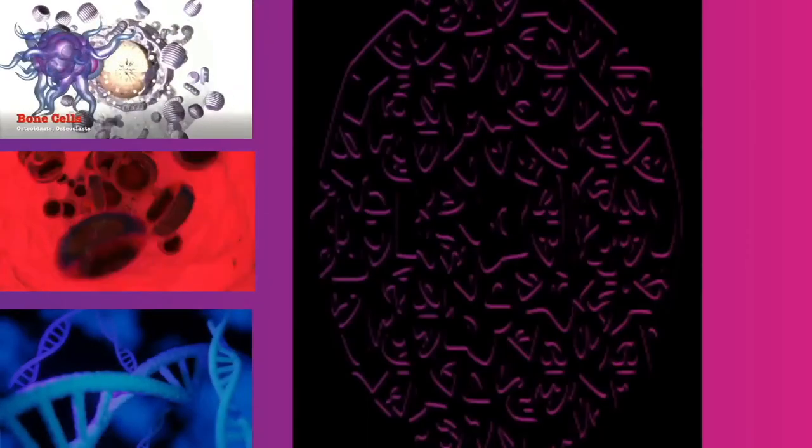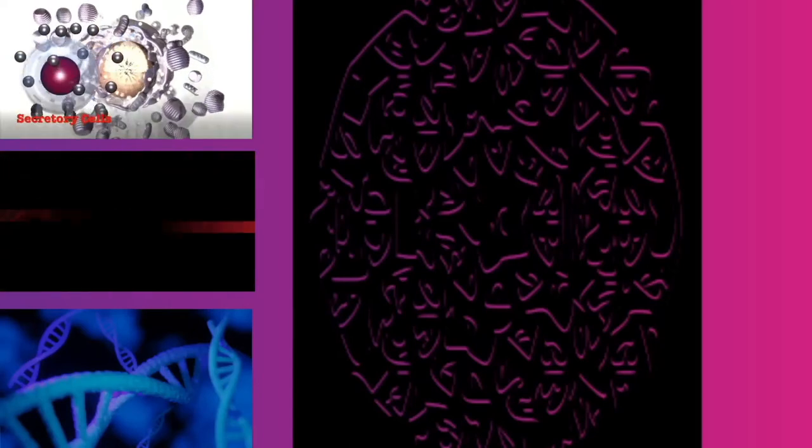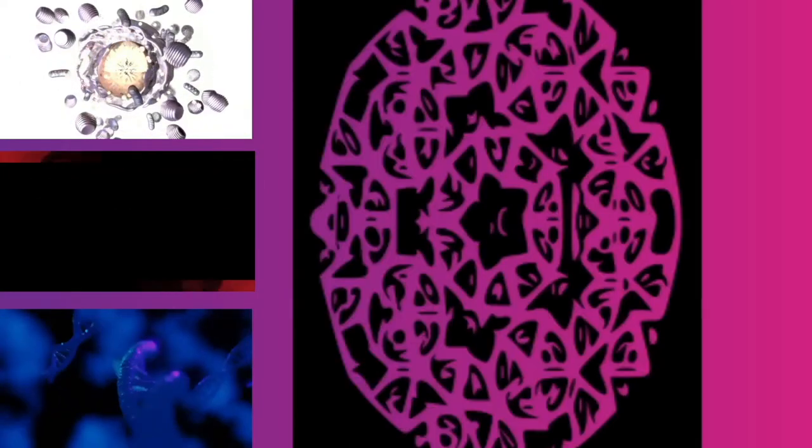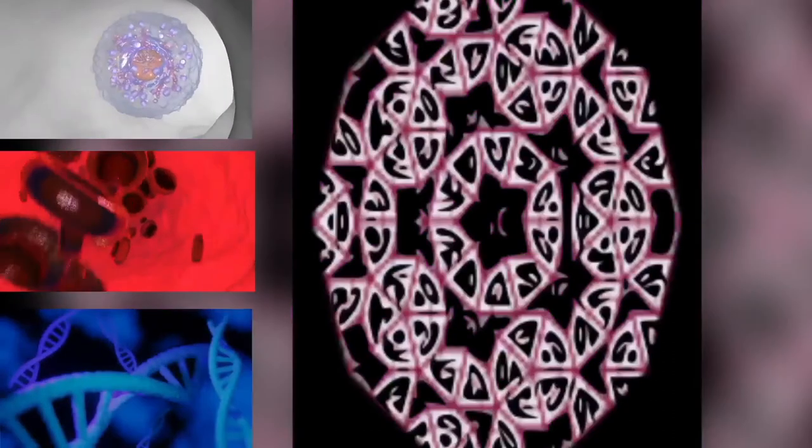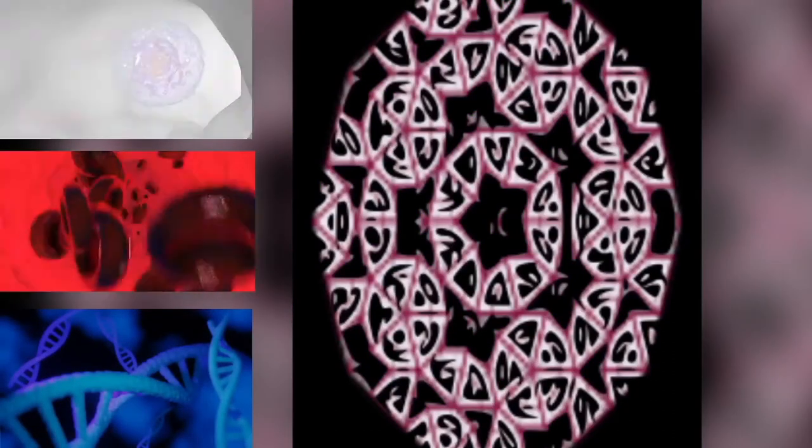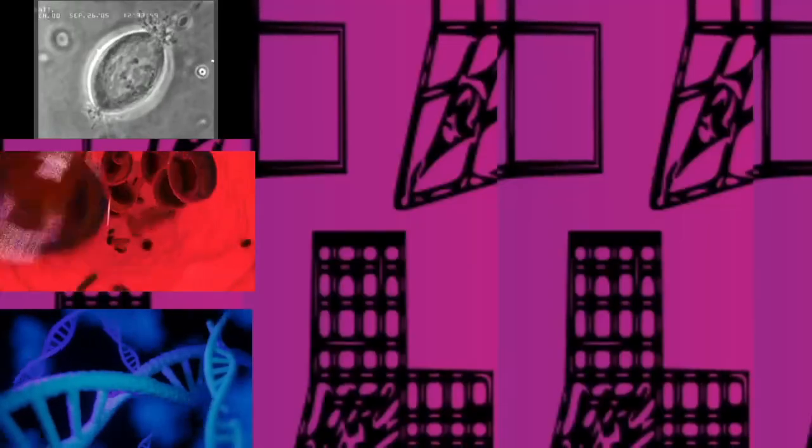Mitochondria and chloroplasts, two organelles found in many eukaryotic cells, contain ribosomes similar in size and makeup to those found in prokaryotes.